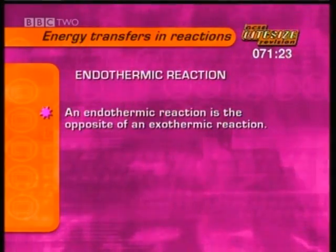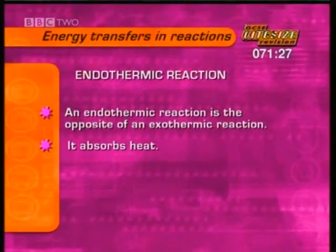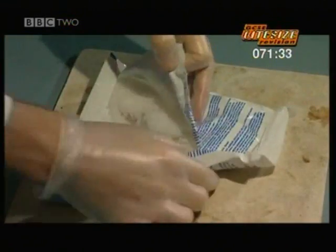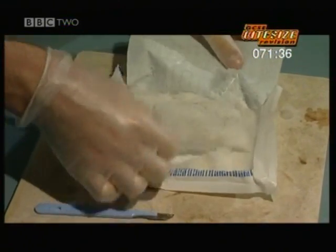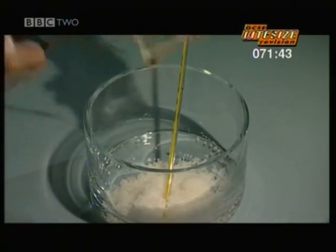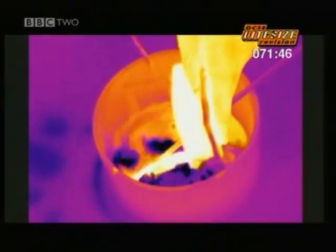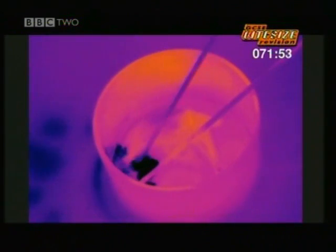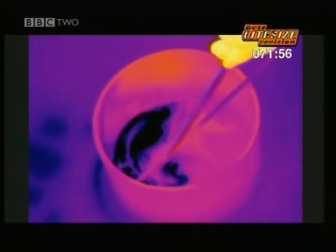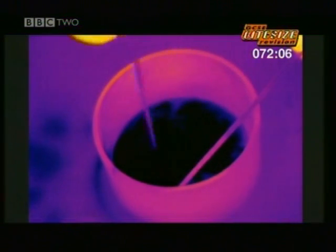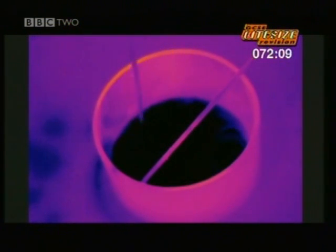An endothermic reaction is the opposite of an exothermic reaction — it absorbs heat, like an instant ice pack. Inside the pack are dry ammonium nitrate crystals and a small bag of water. Break the bag open and the reaction starts. The heat-sensitive camera shows the water as yellow — it's quite warm. Black shows where the mixture is much colder, as the endothermic reaction between ammonium nitrate and water takes heat out of the beaker. Quickly it's down to just 5°C, as cold as a fridge.